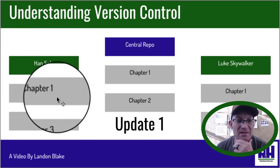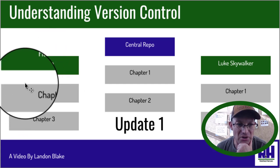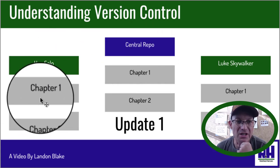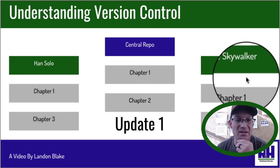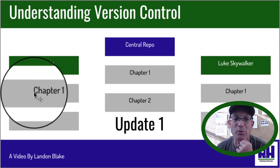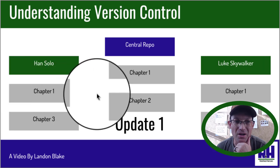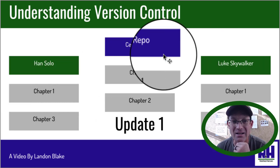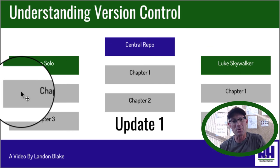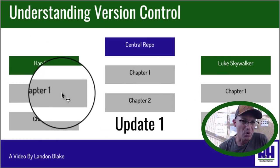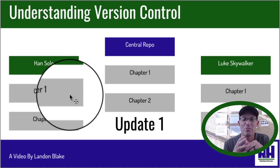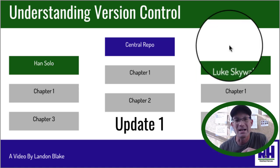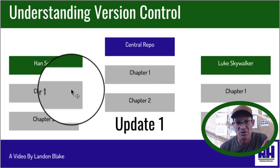Let's say after Han made the first commit of chapter one, he goes in and makes some edits, but then changes his mind and undoes those edits. Luke is never going to know — he'll never know that chapter one changed until Han does a commit back to the central repo. That's actually a pretty useful feature when you're programming, because you can check out a copy of the repo and make some experimental changes, but you don't have to commit those. If you're implementing a feature that's experimental and you break something, you don't break the central repo for everybody — because those changes are local to your computer.